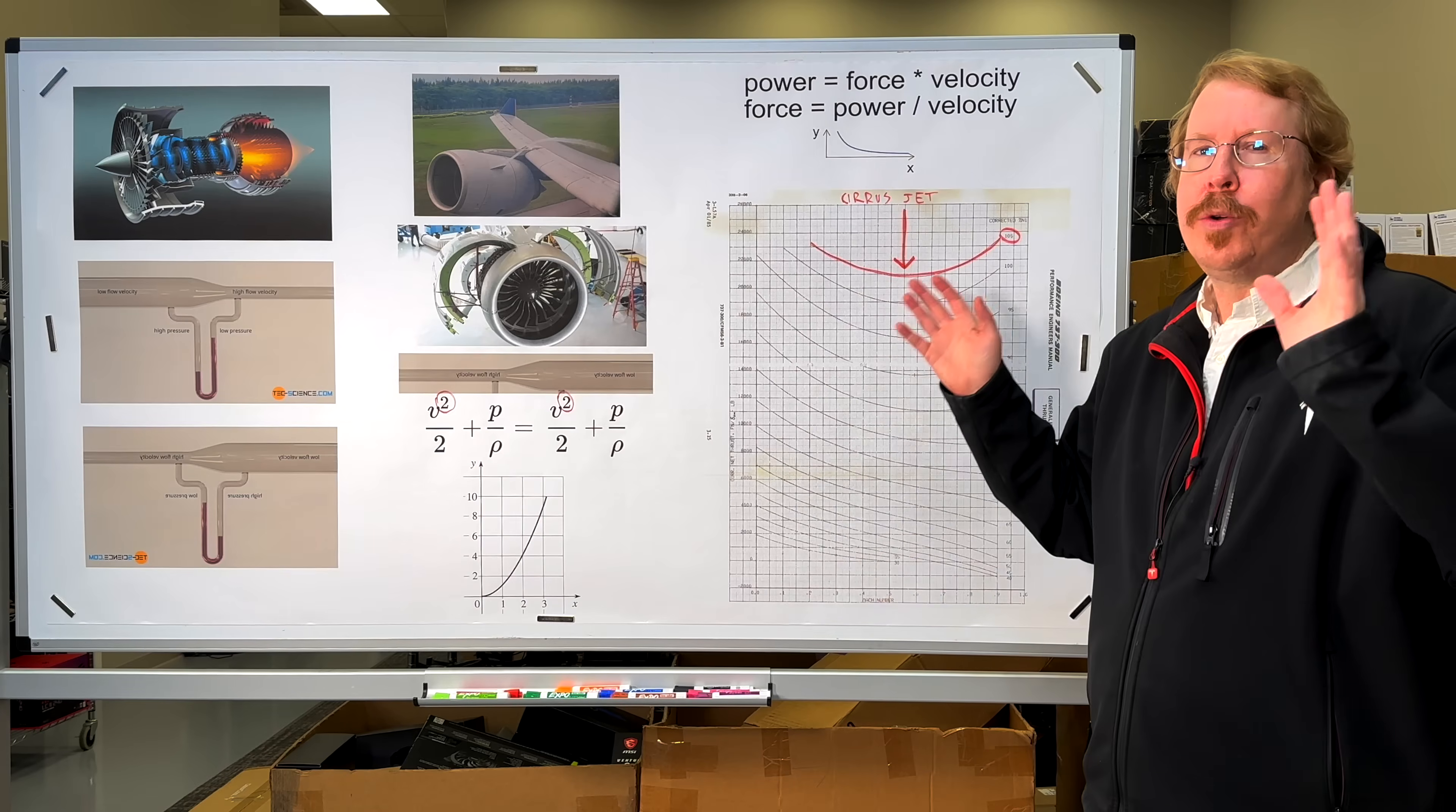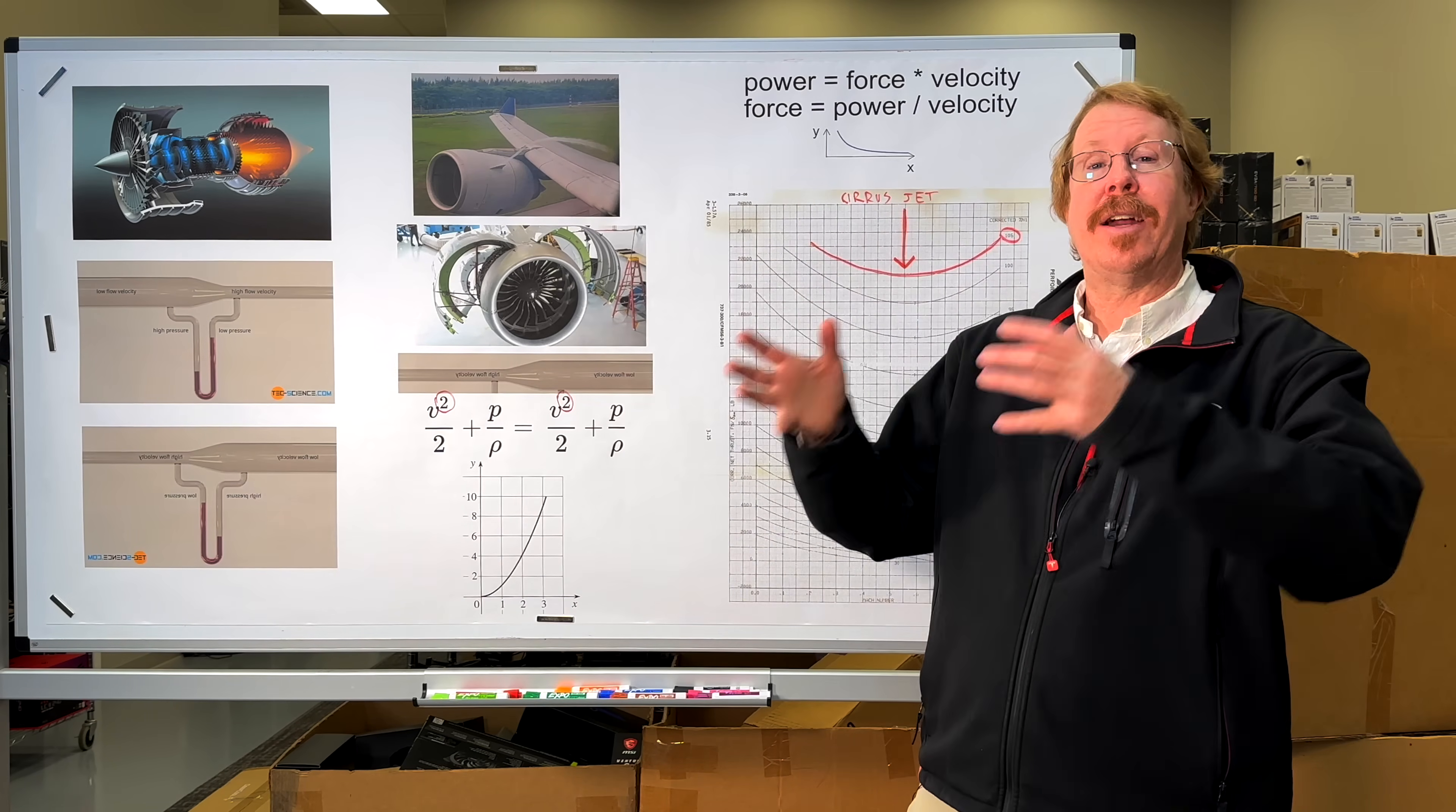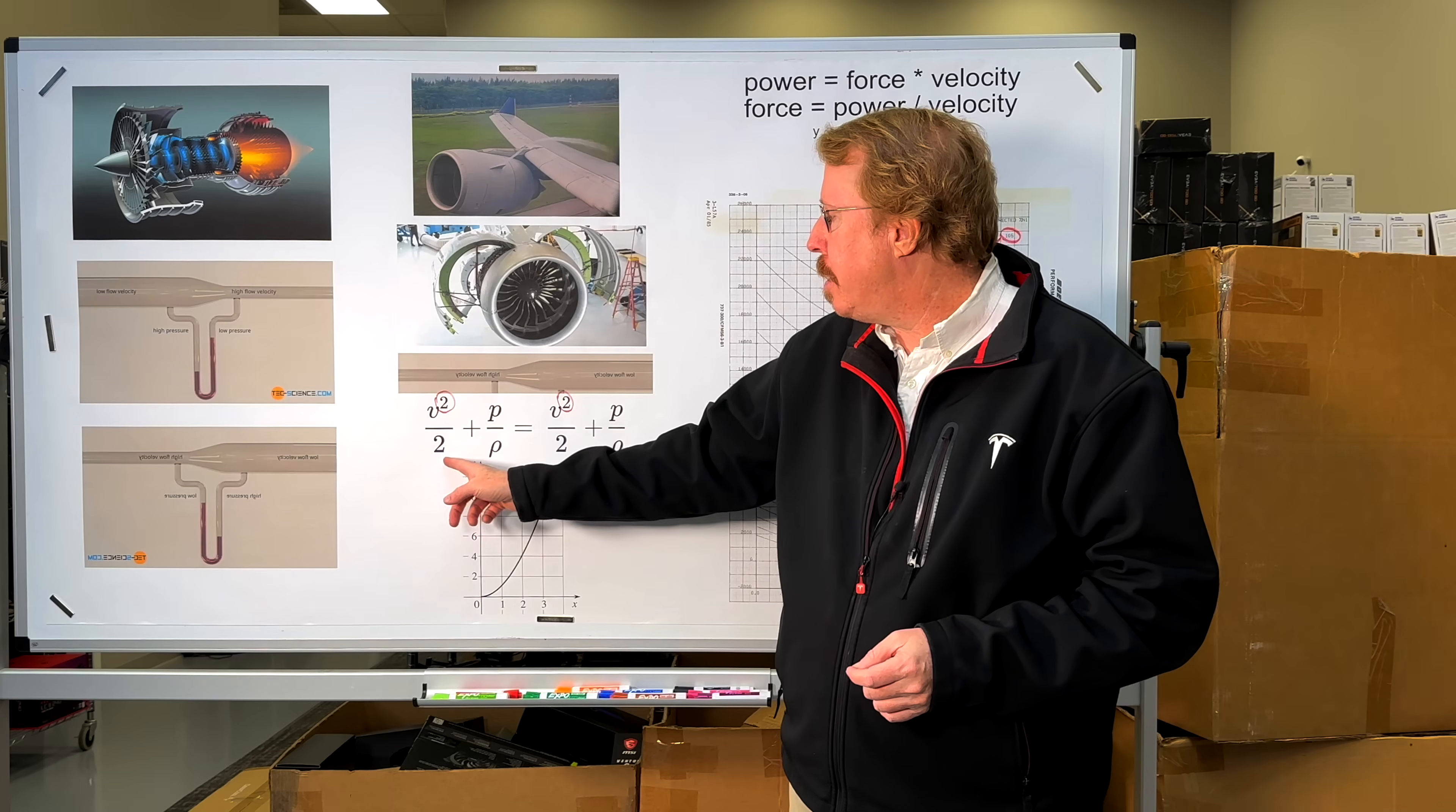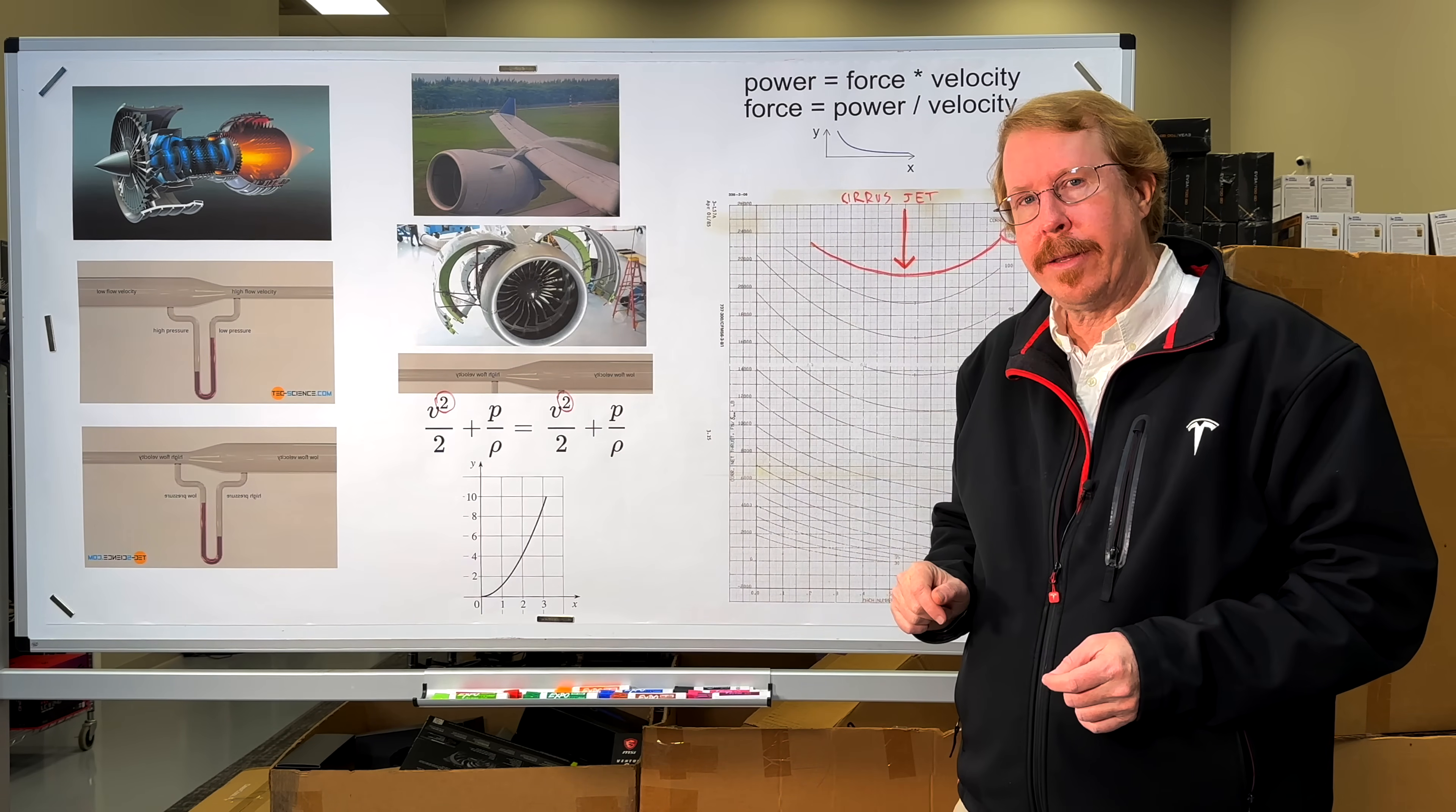Now, you could stop watching here, but why don't we kick it up a notch? I'm going to show you the math. This is Bernoulli's Law. Imagine everything on the left side of the equal sign is the air outside of the inlet and everything on the right side of the equal sign is the air deep inside the inlet. What we say is velocity squared divided by 2 plus pressure divided by air density outside the inlet is equal to velocity squared over 2 plus pressure over air density deep inside the inlet.